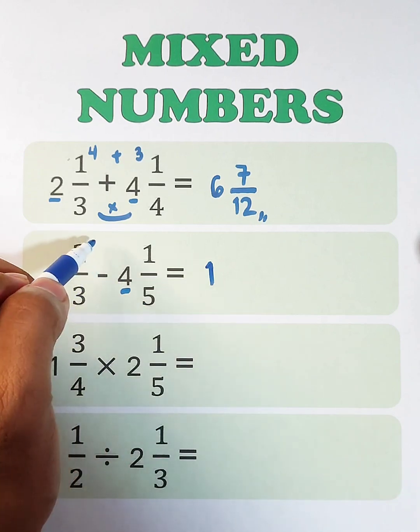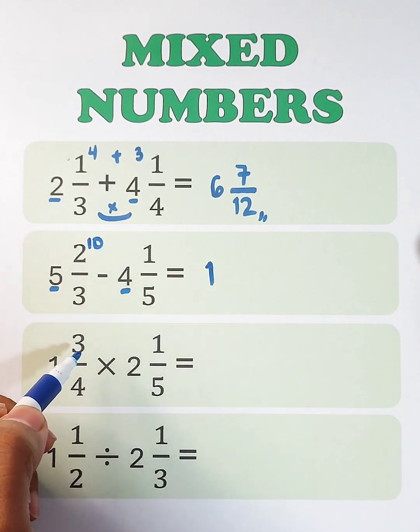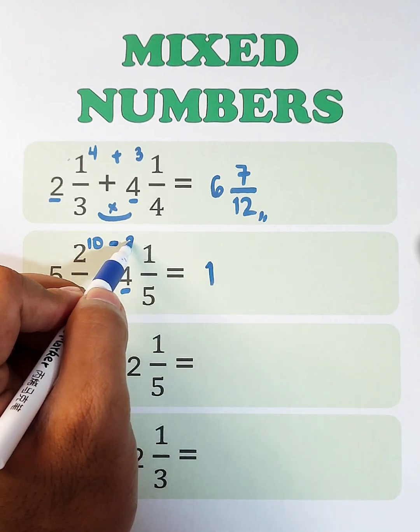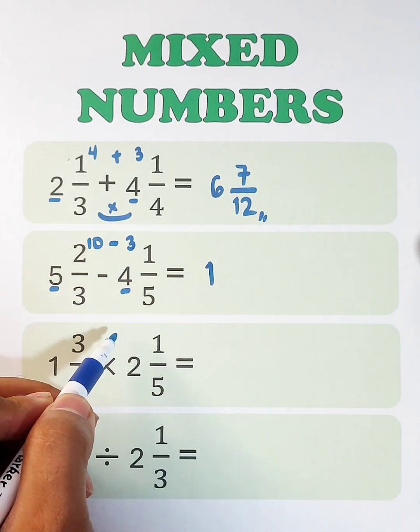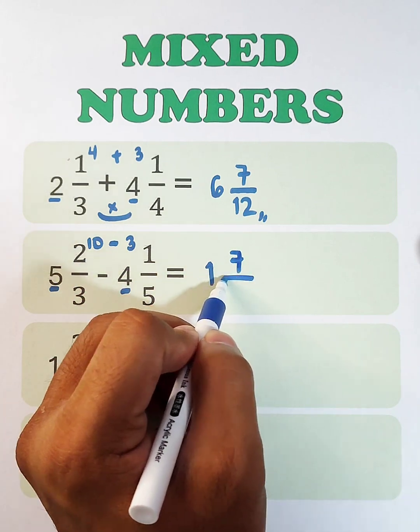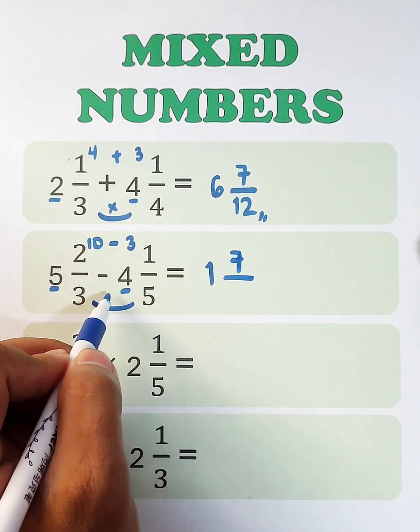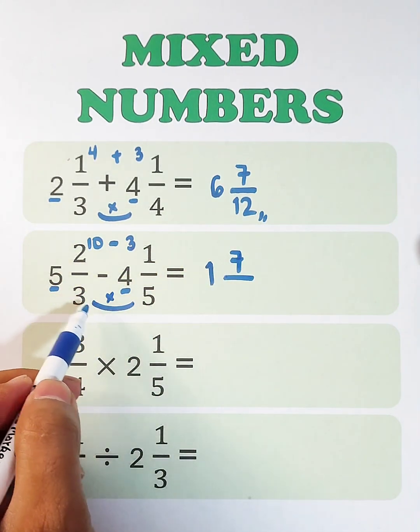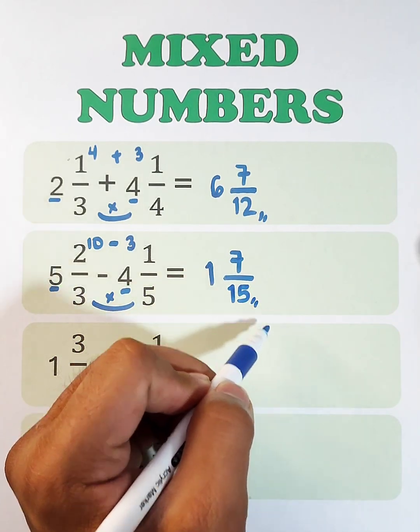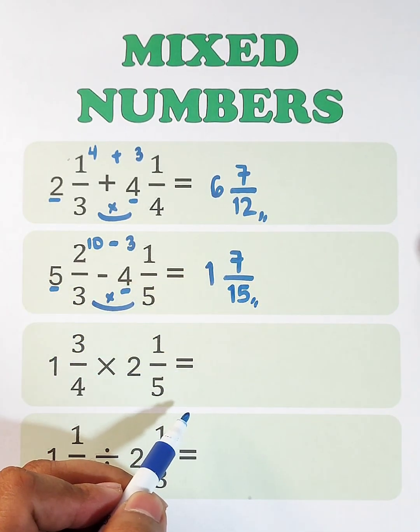2 times 5, which is 10, minus 3 times 1, which is 3. 10 minus 3, which is equal to 7. And as for your denominator, multiply these numbers. 3 times 5, that would be 15. And the answer is 1 and 7 over 15.